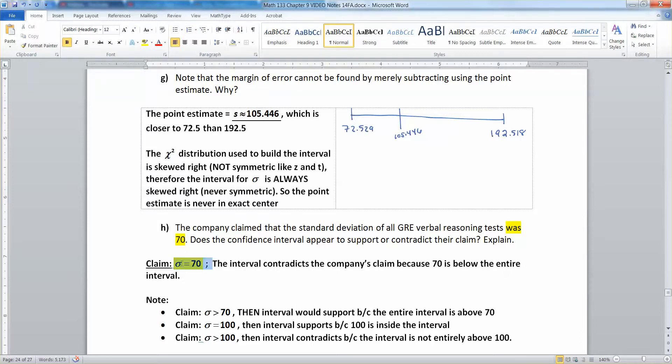So they're claiming it is 70. My interval contradicts that because my interval doesn't have 70 in it. If they claim it is 100, sure, my interval supports that because 100 is in my interval. If they claim it's greater than 70, sure, my whole interval is greater than 70. So that's fine.